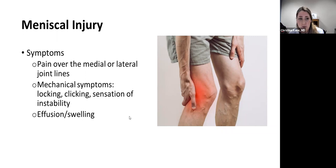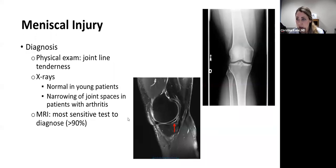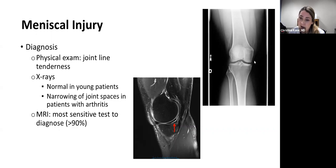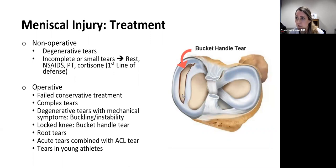The most sensitive physical exam finding is tenderness directly over the joint line. We always start with x-rays — in younger patients these are normal, showing nice joint spaces, whereas arthritis would show narrowing or bone-on-bone. The most sensitive test is an MRI. If I'm considering operating for a meniscus tear, I always get an MRI first. MRIs are not 100% perfect, so occasionally I scope someone with high suspicion and the MRI missed it, but this is rare.